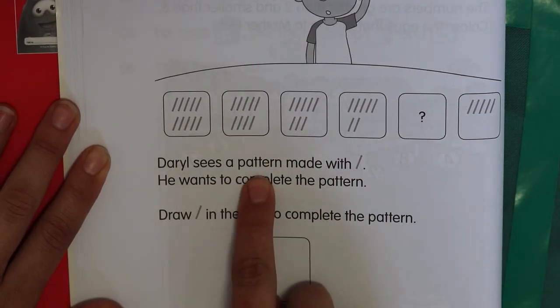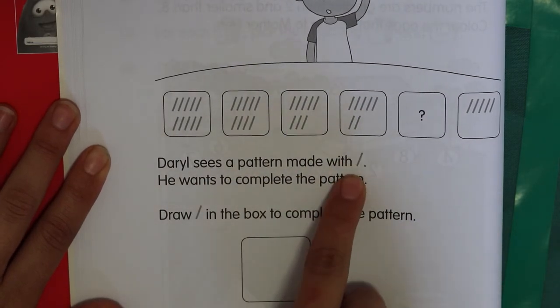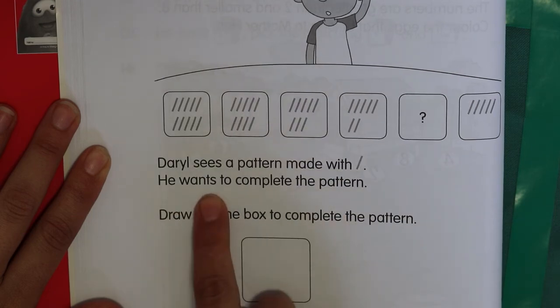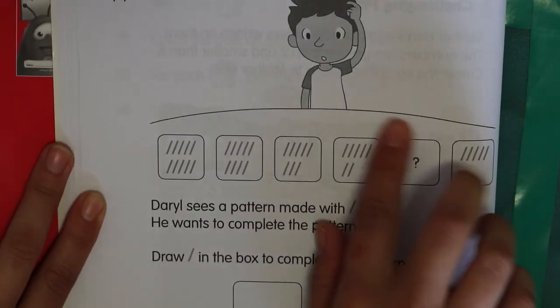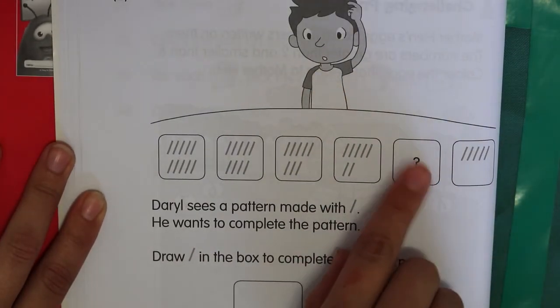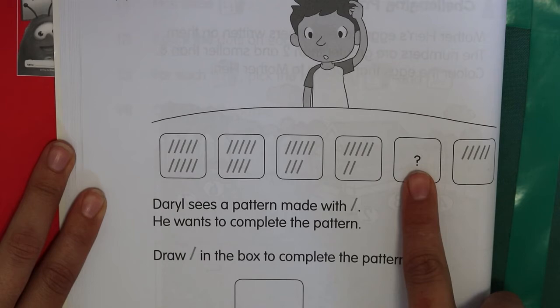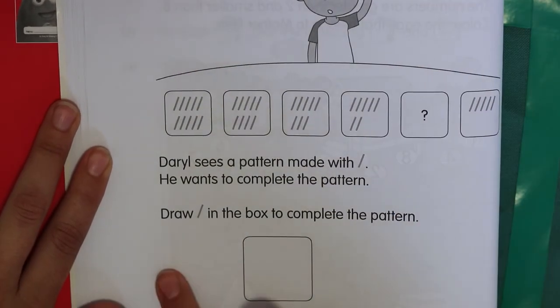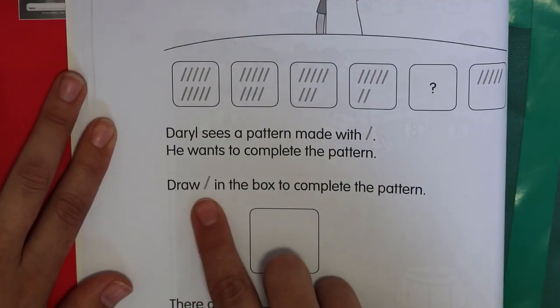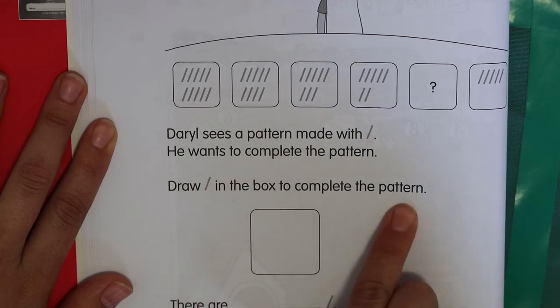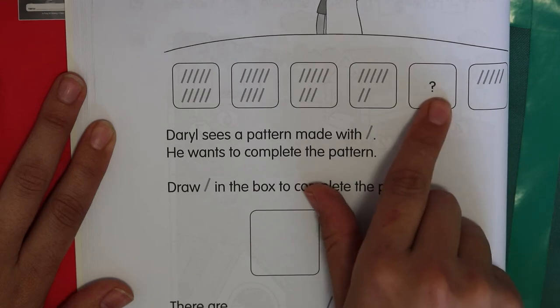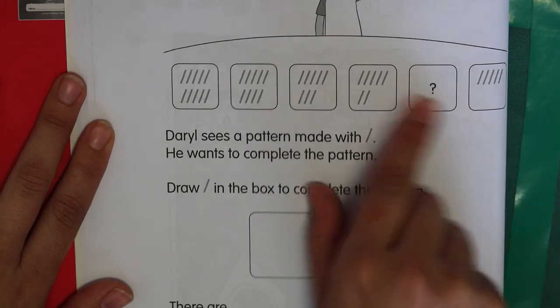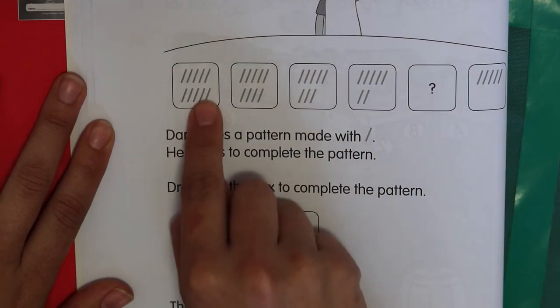Daryl sees a pattern made with lines. He wants to complete the pattern. So this is Daryl. He's a bit confused because he's not sure what needs to go there. Draw lines in the box to complete the pattern. So first you need to go and have a look what's happening in each one to see what's happening there.